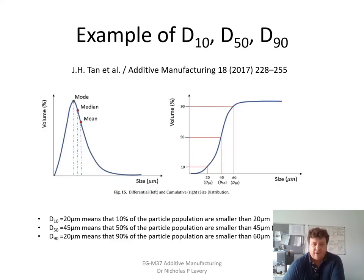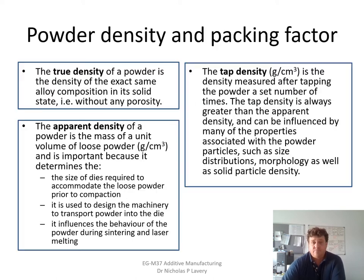Looking at a larger powder more representative of additive manufacturing, from a paper by Tanit et al. in 2017, this particular powder has a slightly non-symmetric Gaussian distribution with distinct mode, median, and mean. The cumulative distribution shows that 10 percent of particles are below 20 microns, 50 percent are below 45 microns, and 90 percent are below 60 microns.